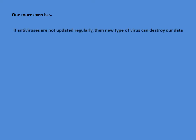Let us have one more exercise. Statement: 'If antiviruses are not updated regularly, a new type of virus can destroy our data.' The threat here is the virus — it is an external factor, not in our control. We don't know who is creating the virus or how it will come to our system. The vulnerability is the expired antivirus. The risk is that when a virus and an expired antivirus are present together, there is always a chance of data destruction.